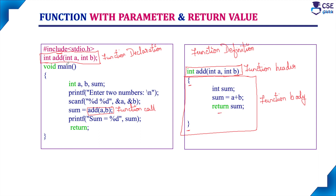This is the return statement. Considering the function declaration — since the function passes parameters, we have added parameters in the parenthesis: int a and int b. A is of integer data type and b is also of integer data type. Since there are more than one argument, they are separated with a comma. 'add' is the function name, and 'int' is the return data type of this function. The function declaration ends with a semicolon. In the main function, three variables are declared: a and b are used to get input from the user, and sum is the variable to store the result of the calling function.